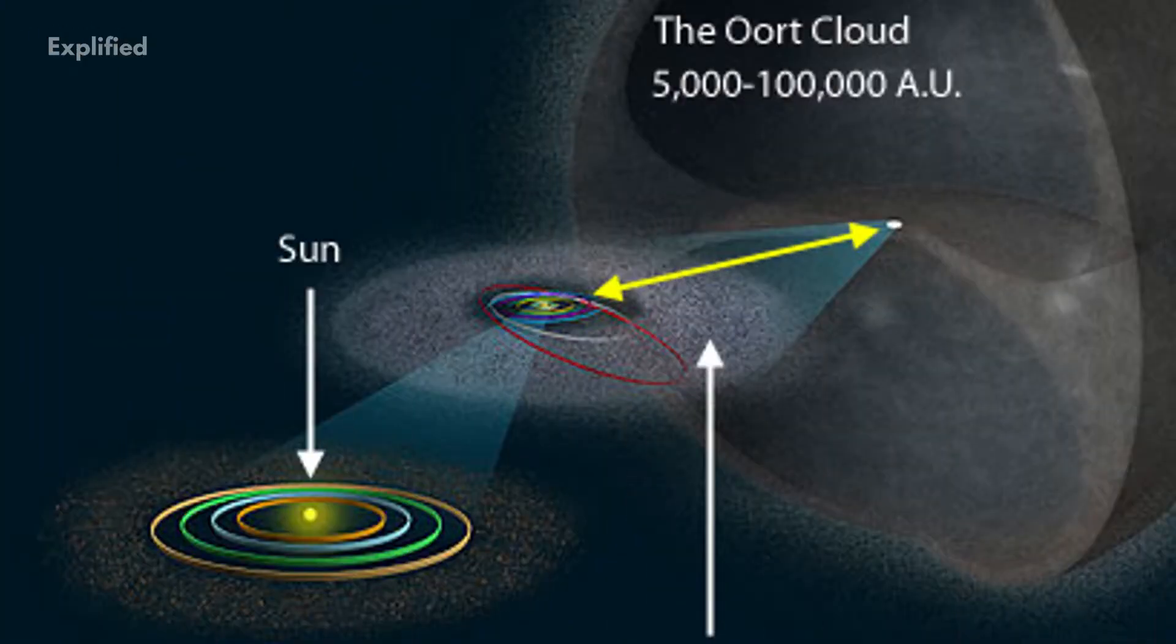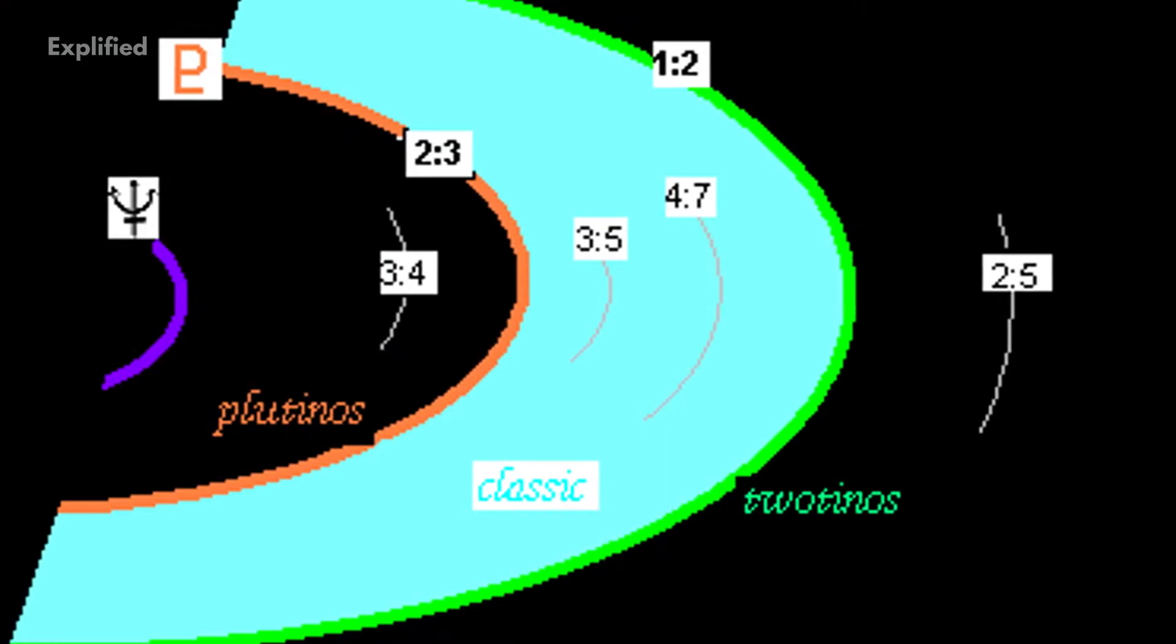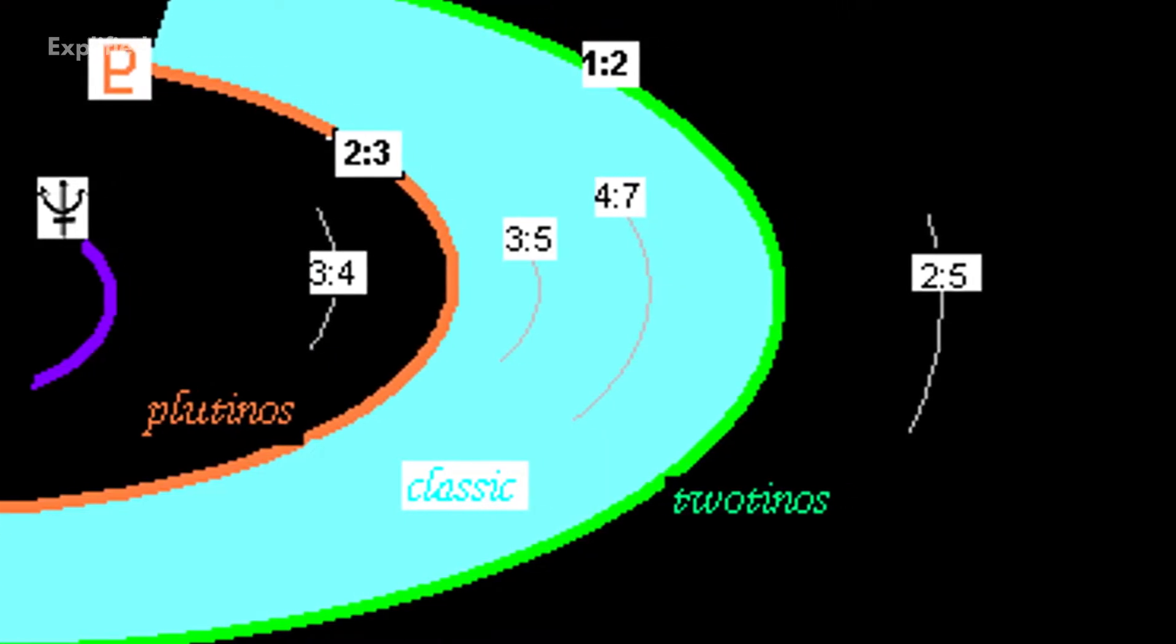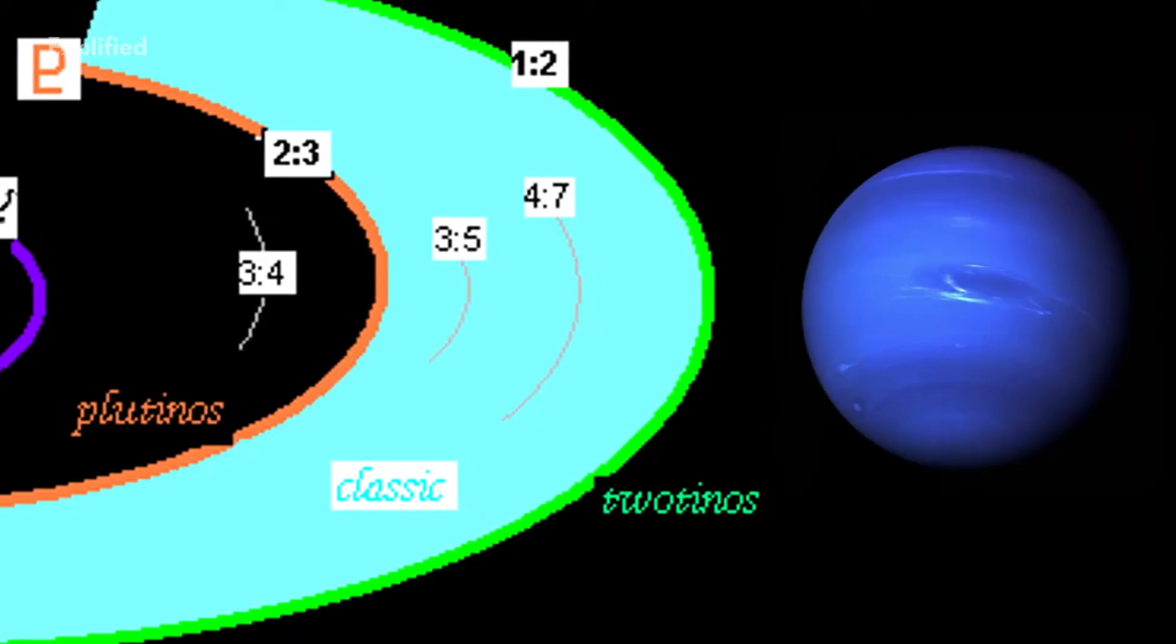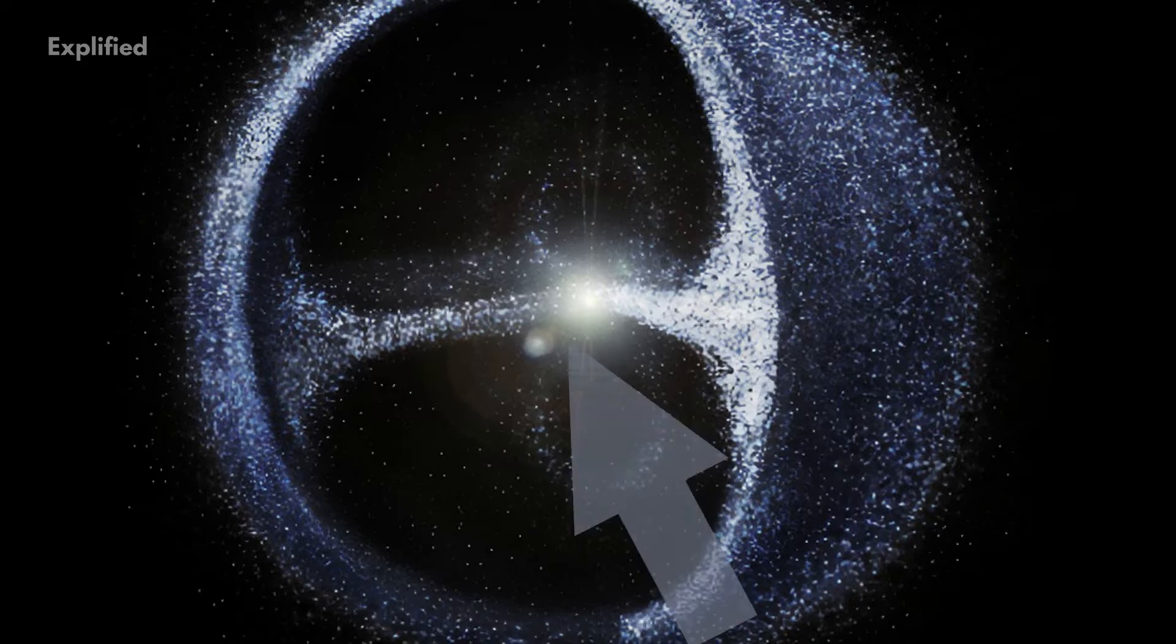This cloud is thought to surround the solar system out to a distance of more than three light years. You will be shocked to know that by way of comparison, the Kuiper belt that exists beyond the orbit of Neptune is about 1000 times closer to the Sun than the inner wall of the Oort cloud is to the Sun.